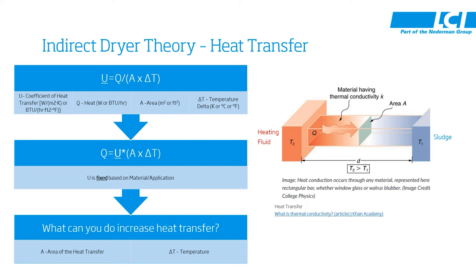Indirect drying theory on heat transfer is nothing more than simple heat transfer. We take a high temperature — which if you look at the diagram is our heating fluid, T2 — and transfer that heat to a low temperature sludge, which is T1. We do this over an area of heat transfer of the dryer, represented by A, and we account for the thermal conductivity of the material, which is K.